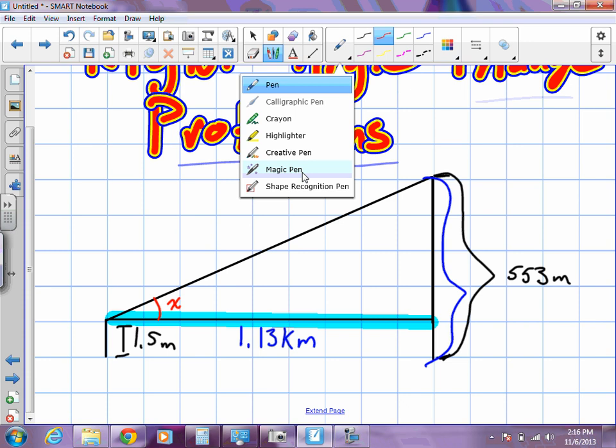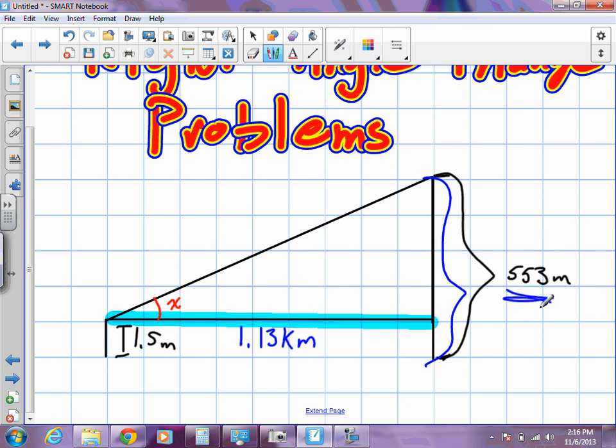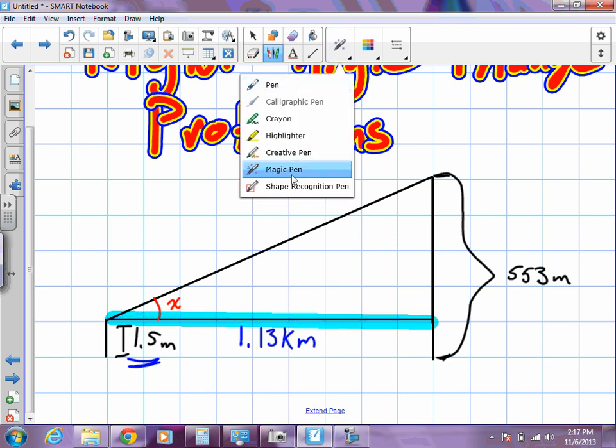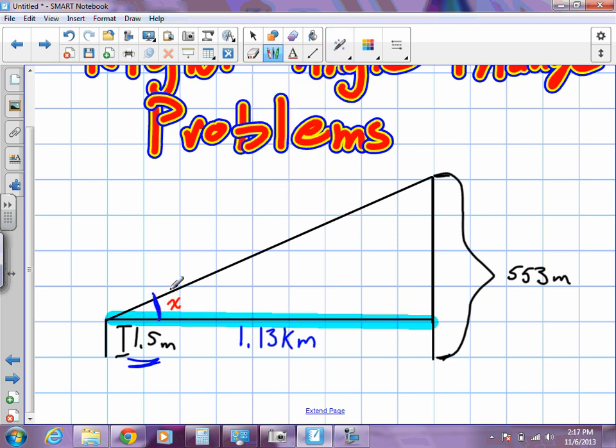This is supposed to represent the CN Tower here. It says that the CN Tower is 533 meters tall. It says we're standing on Toronto Island, which means we're 1.13 kilometers away from the CN Tower. We are 1.5 meters tall, and the question is asking us to find the angle of elevation from our eye line to the top of the tower.